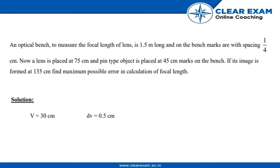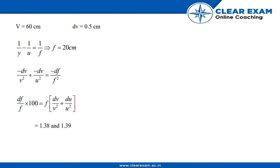We have to find out the maximum possible error of focal length. So in this solution, u will be 30 centimeters because the focal length - the bench is 1.5 meters, right? And du is equals to 0.5 centimeters.